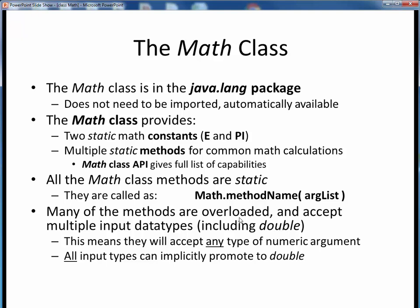Also, many of the math methods are overloaded methods, which simply means there may be alternate forms accepting different input data types. So what this usually means for us is that these methods will accept any type of numerical input, up to and including doubles, because all numerical input types can be implicitly promoted up to doubles.